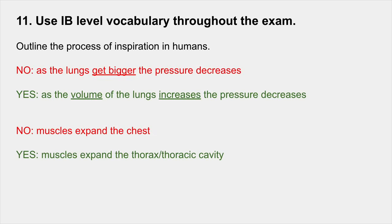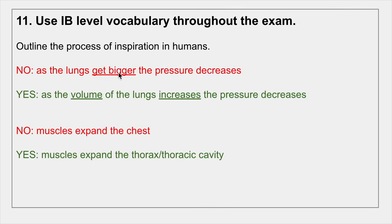Number 11: use IB-level vocabulary throughout the exam. If you're asked to outline the process of inspiration in humans, saying 'the lungs get bigger' is technically correct but won't get a mark. The mark scheme uses IB-level vocab — we say 'the volume of the lungs increases.' Similarly, calling it 'the chest' won't cut it; the correct term is the thorax or thoracic cavity. Make sure you use those terms in every answer.